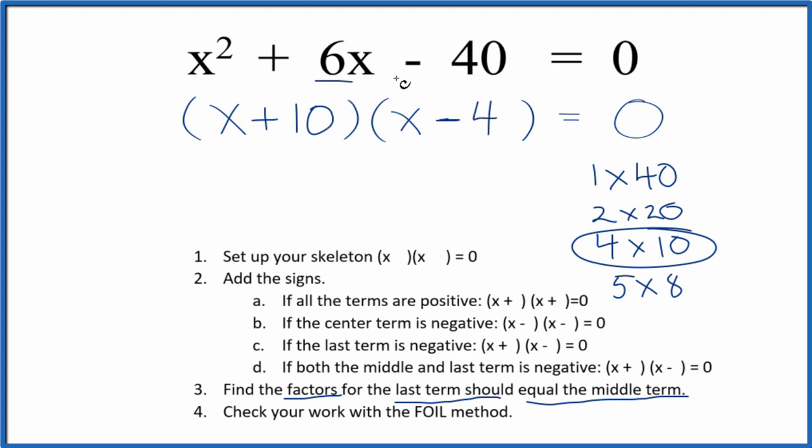So we factored the equation x squared plus 6x minus 40, but we really should check our work here with the FOIL method. So the first term, x times x is x squared.